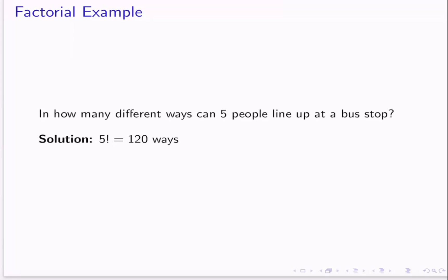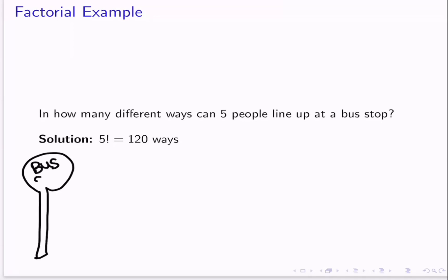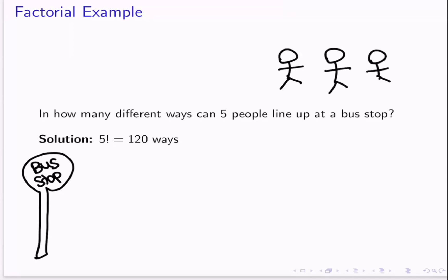Now I also want to discuss why this works. Why is factorial essentially a magic thing that can tell us how many ways n unique objects or people can be arranged? Let's forget about factorials for a second and just draw a bus stop and think about what the answer would be. So I have 5 people lined up who are going to line up at my bus stop: here's 1, 2, 3, 4, and 5.